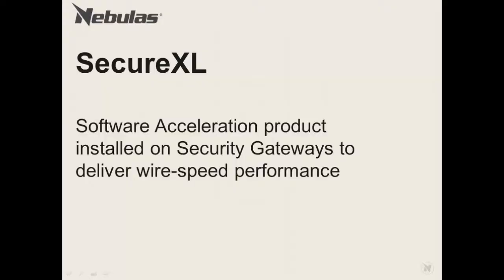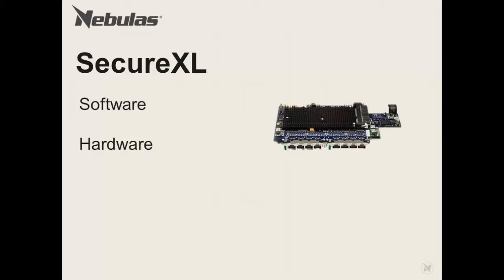SecureXL is a software acceleration product installed on security gateways to deliver wire speed performance. It is either implemented in software or in hardware with the use of acceleration cards. Nokia Accelerated Datapath modules were available for IP series appliances but have since been replaced with the CheckPoint Security Acceleration Module. These are available for the 21000 series and can deliver sub-5 microsecond latency.